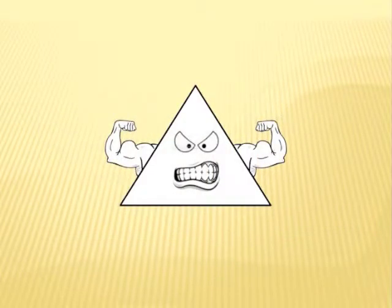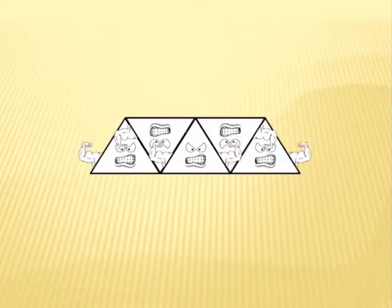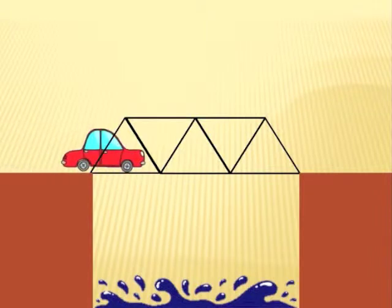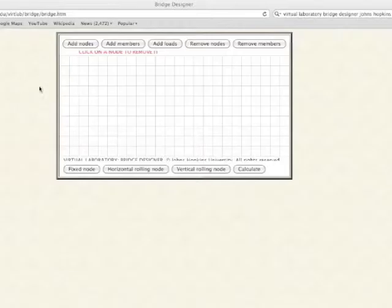Triangles are the strongest of shapes, and when combined to make trusses, they can make any structure, such as a bridge, stronger. When there is a weight being placed on the bridge, there are tension and compression forces being placed on each member.